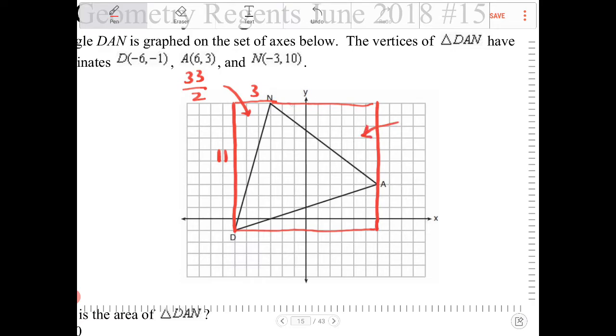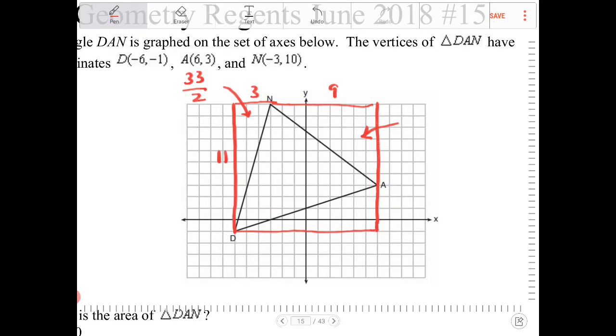This guy over here, 2, 4, 6, 9 - this has a side length of 9. And 2, 4, 6, 7 - this has a side length of 7. So this is going to be 63 halves.